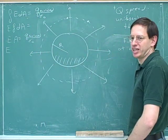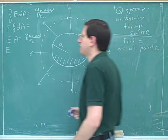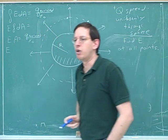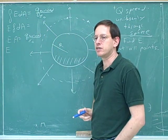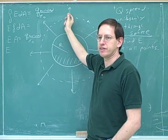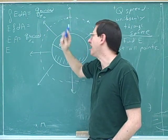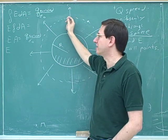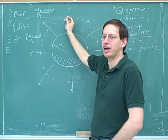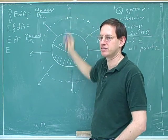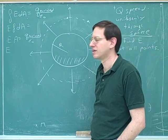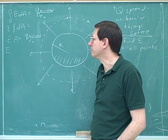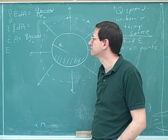Remember, E is what we're trying to figure out — the whole point here is to find E, so we're not going to plug in for that. What does A represent? A is the surface area of this Gaussian surface — not the surface area of the charges, but the surface area of the Gaussian surface. It would be easy to find the wrong area here.